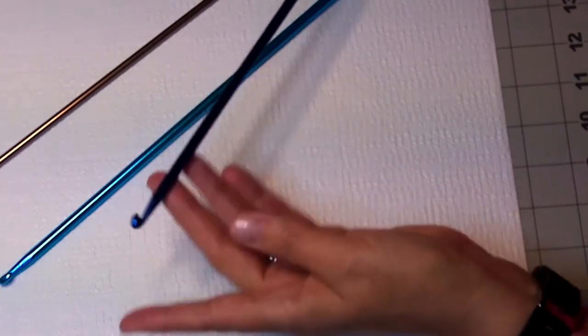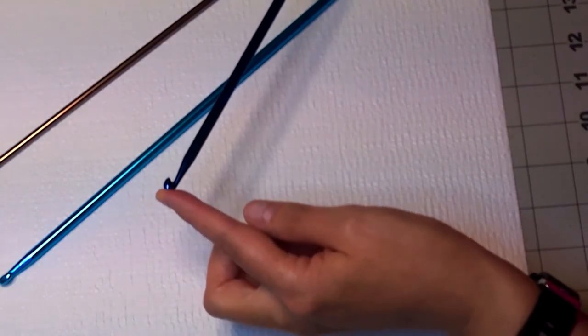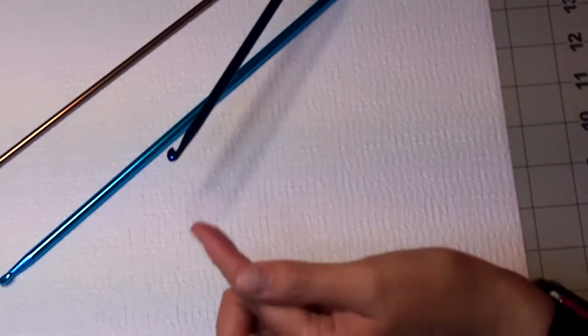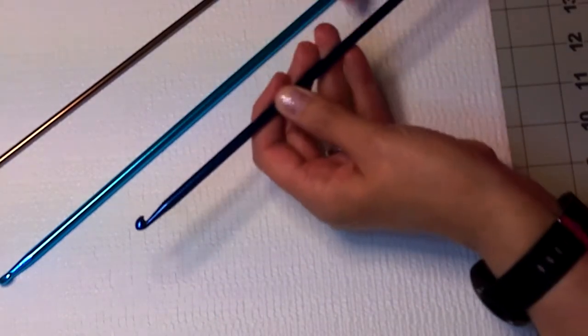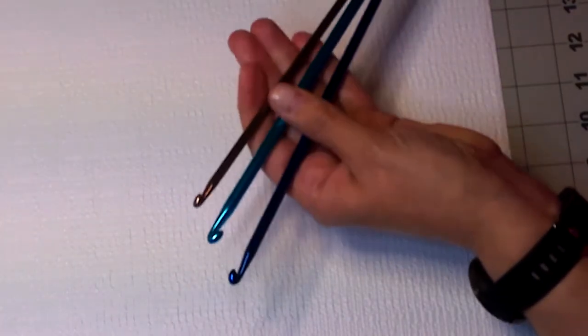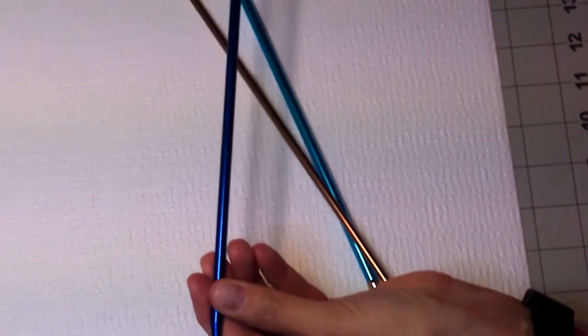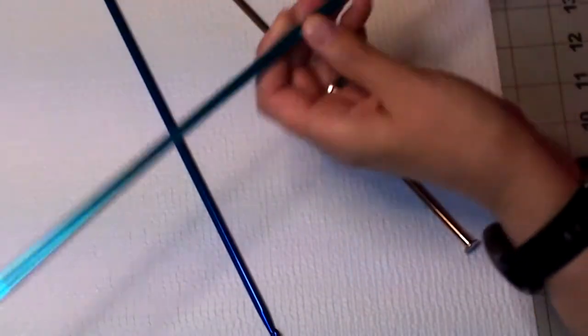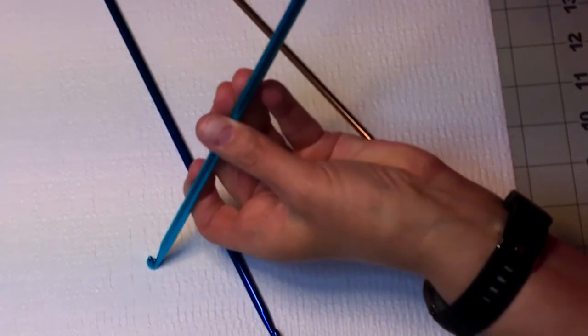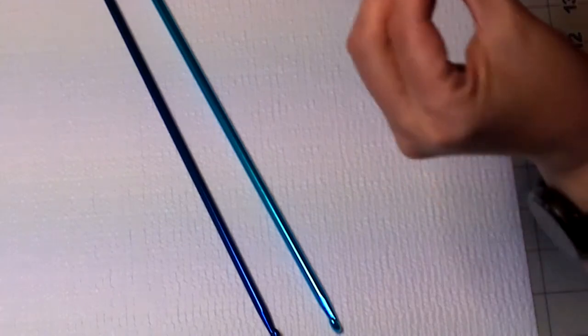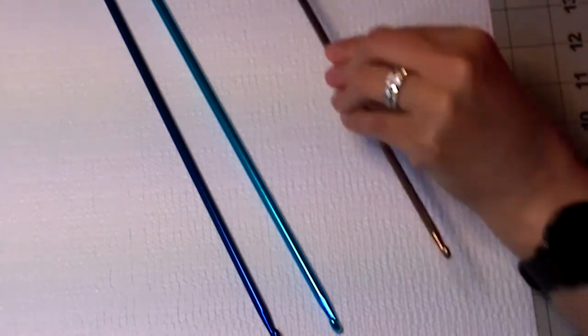I am still very new at it. If you would like to see some Tunisian crochet work, please comment down below and I can do a separate video on that. I have these in three different sizes. This one is a J hook, this one is a K hook, and this one is an H hook.